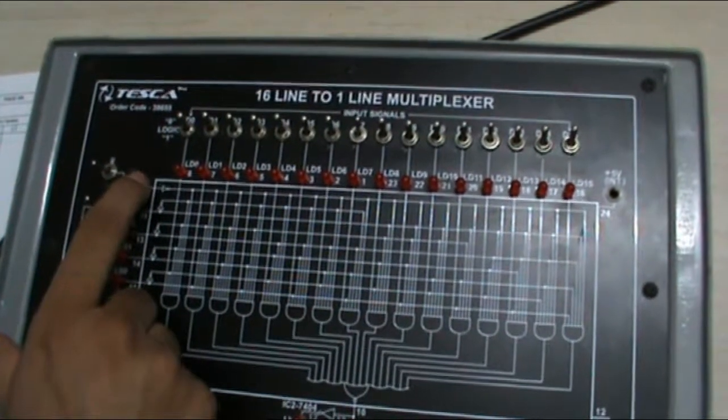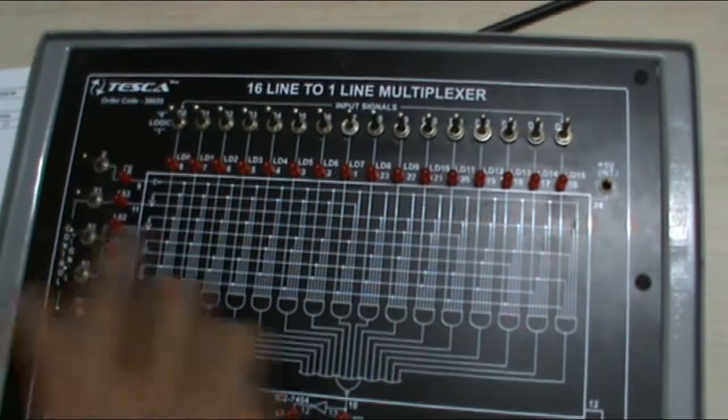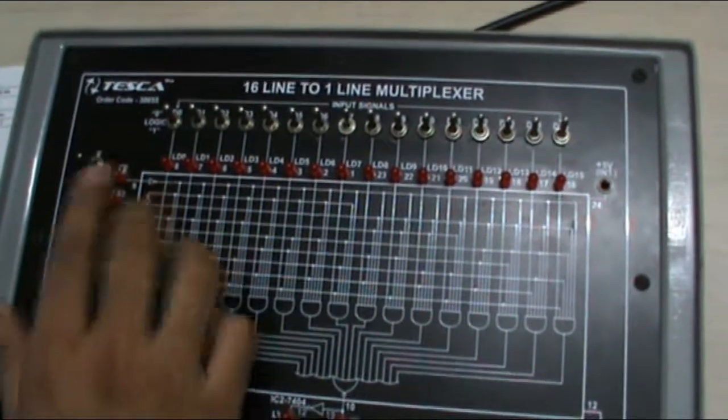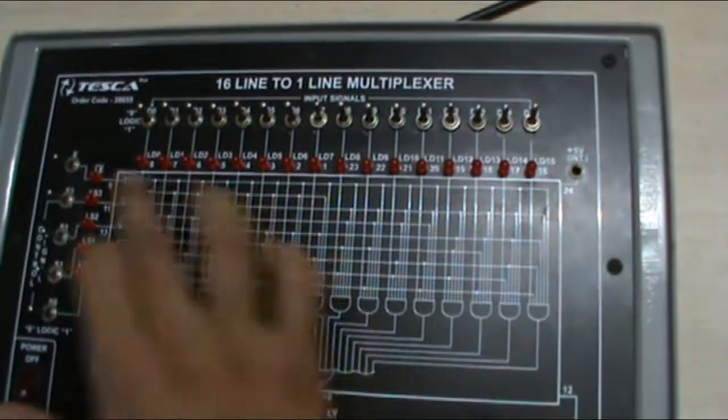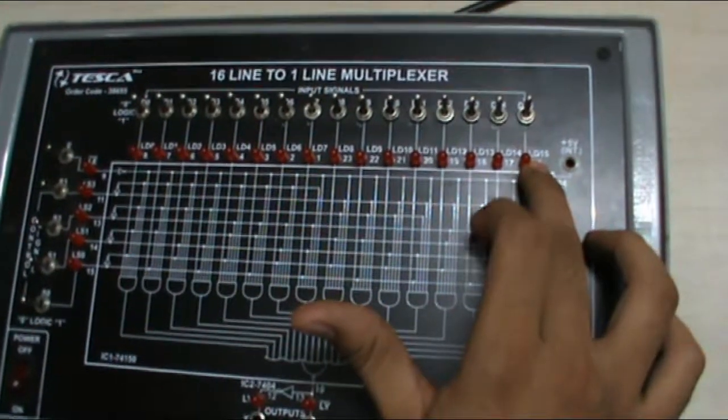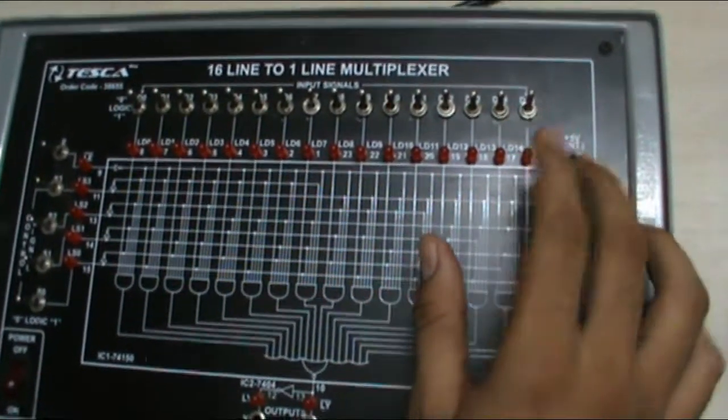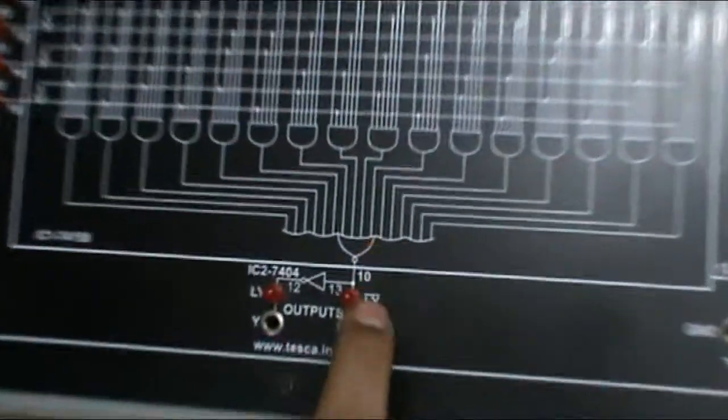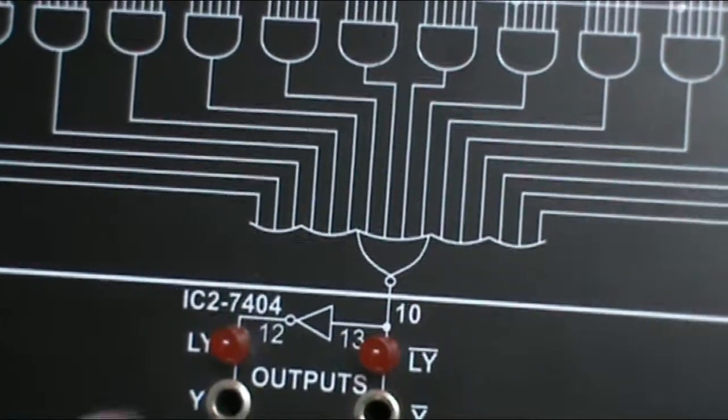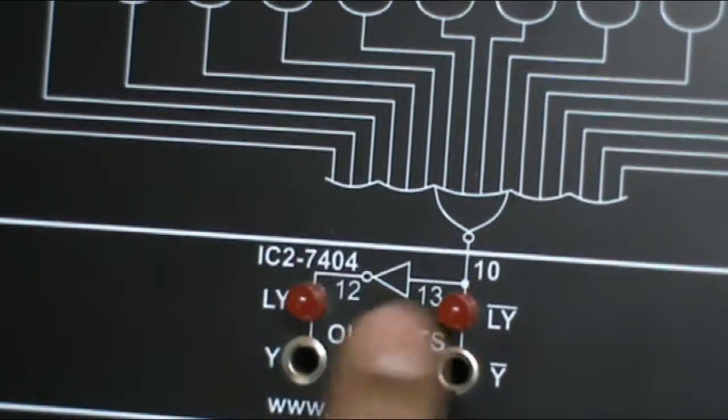This is the LED that shows you the enable switch on or off with logic 1 or 0. These are the LEDs from LD0 to LD15. These 16 LEDs show the input signals 1 or 0 with logic 1 or 0. This is the output LY and LY bar. This is the one output LY bar and it is then complemented to LY with a NOT gate.